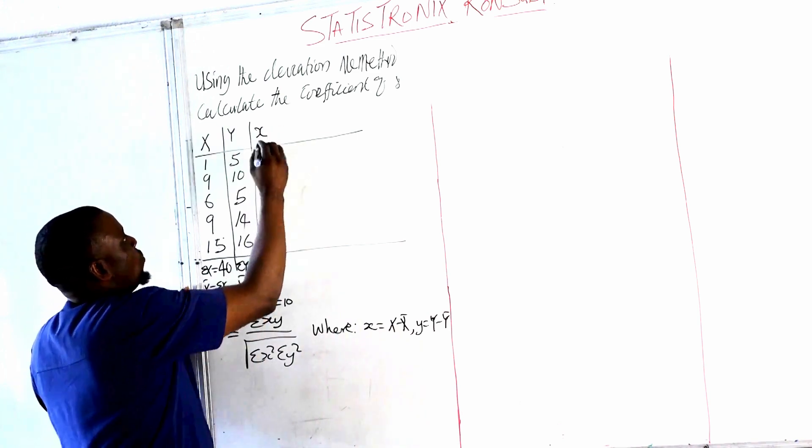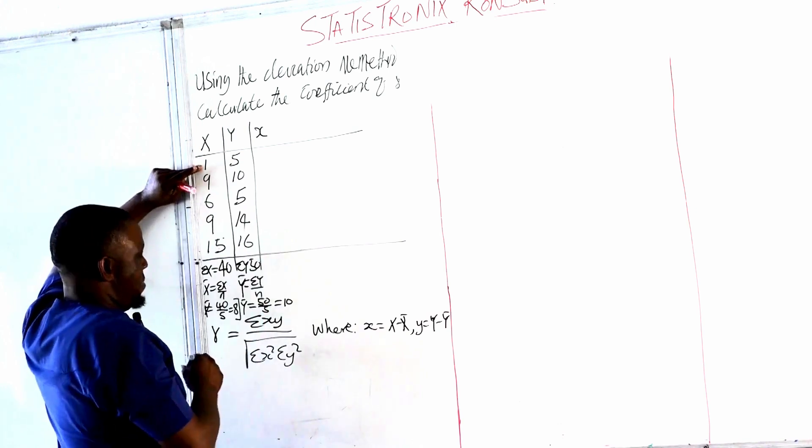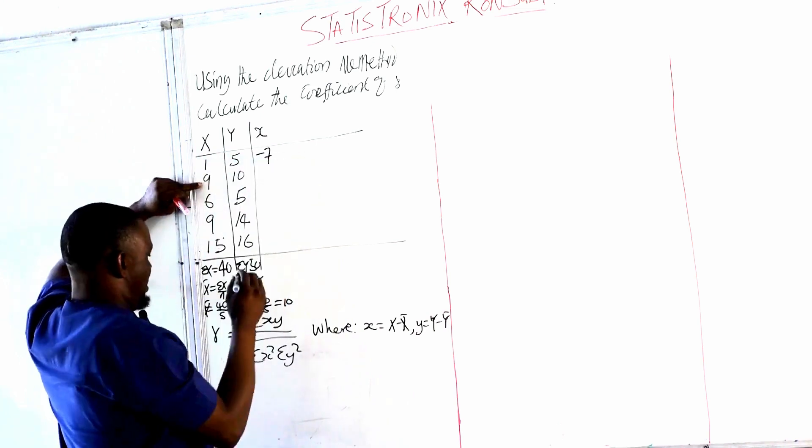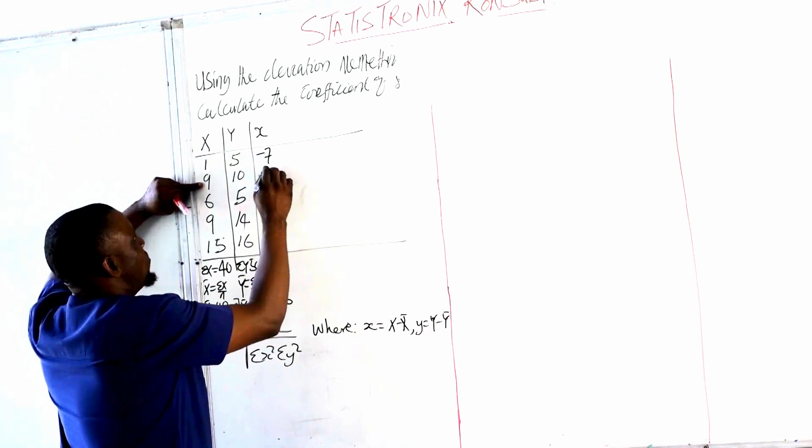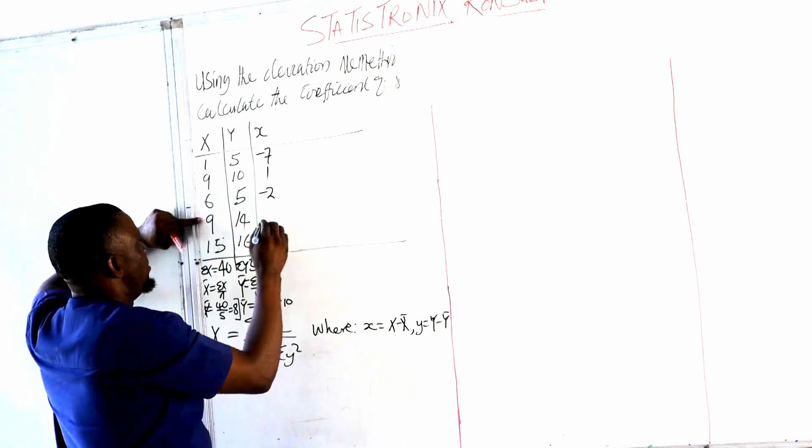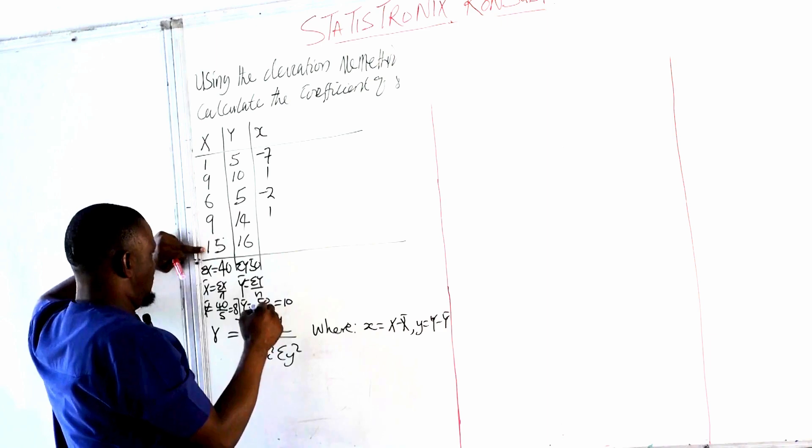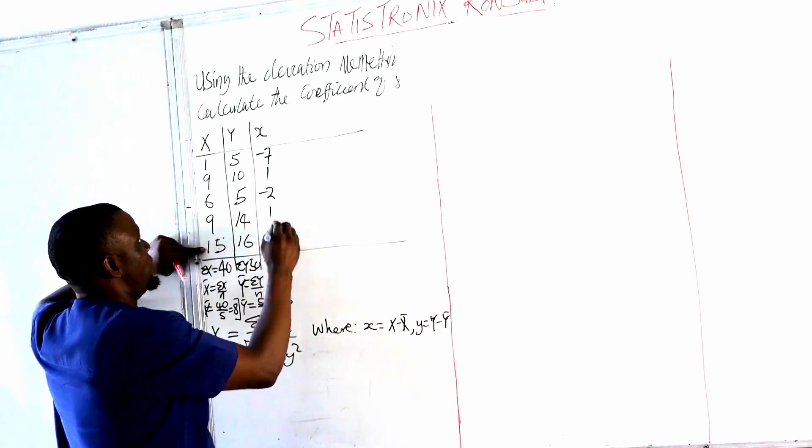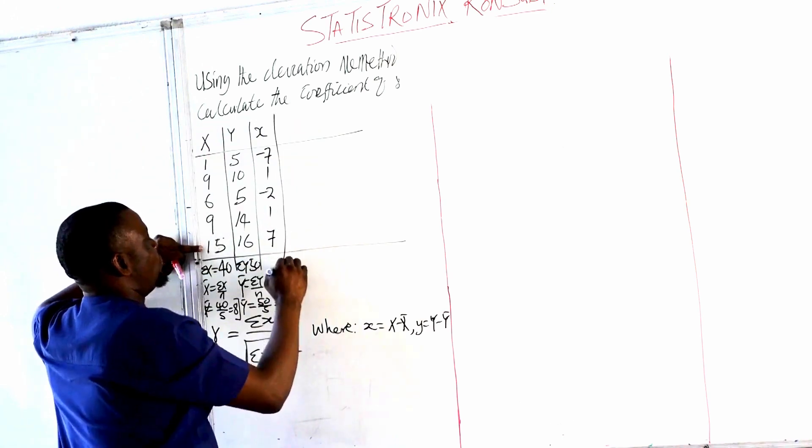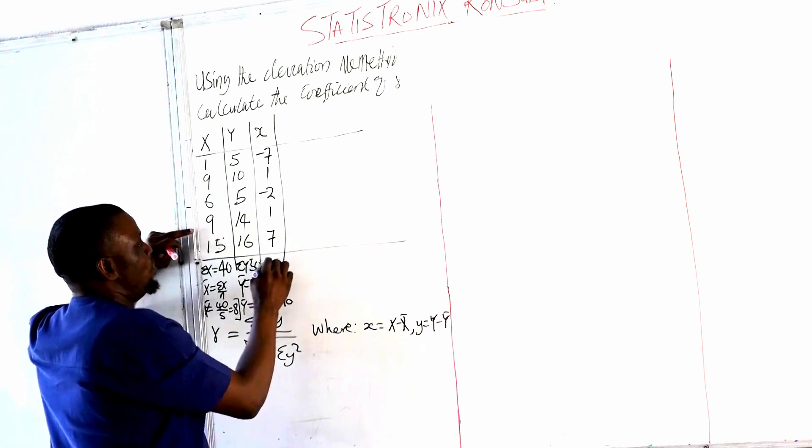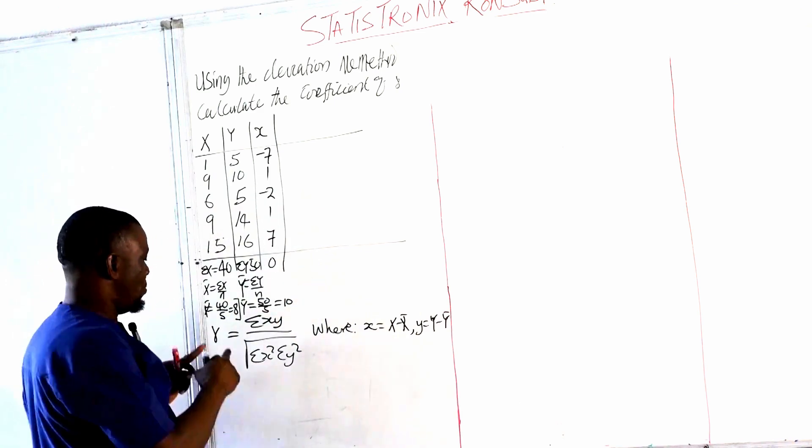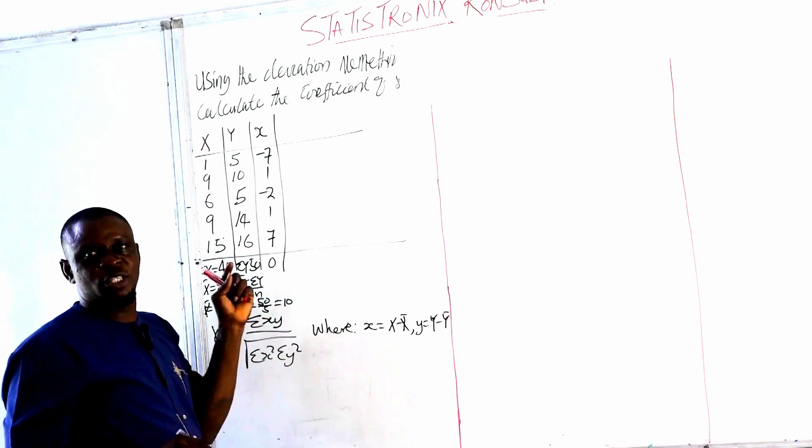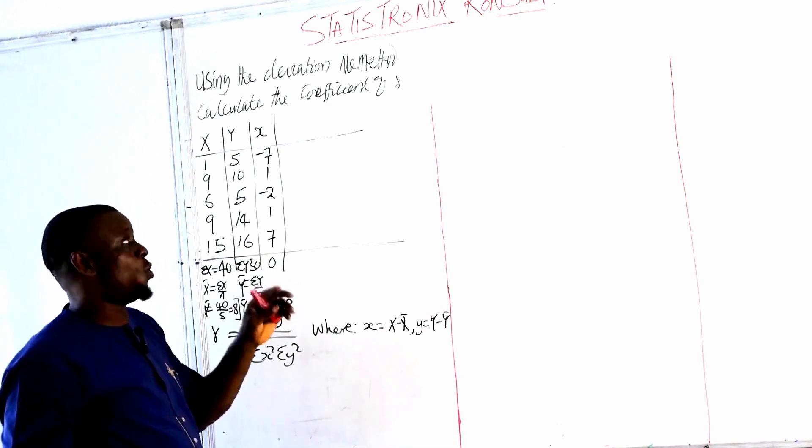So our small x will be equal to 1 minus 8... so this is 9 minus 8, 6 minus 8, 9 minus 8, and then 15 minus 8 will have 7. Now our small x, if we add this, is going to be 0, and that means that our mean was correct, because we often see as a property of the arithmetic mean that the summation of the division is equal to 0.